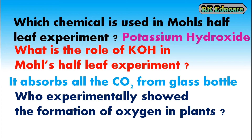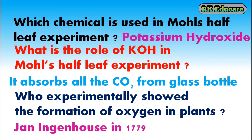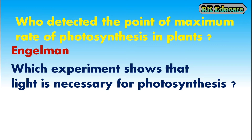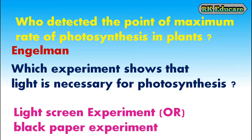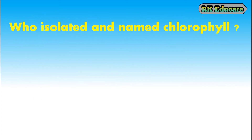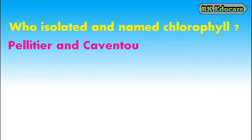Who experimentally showed the formation of oxygen in plants? John Ingenhousz in the year 1779 showed experimentally the formation of oxygen in plants. Who detected the point of maximum rate of photosynthesis in plants? Engelmann detected the point of maximum rate of photosynthesis in plants. Which experiment shows that light is necessary for photosynthesis? The light screen experiment or black paper experiment shows that light is necessary for photosynthesis. Who isolated and named chlorophyll? Pelletier and Caventou isolated and named chlorophyll.